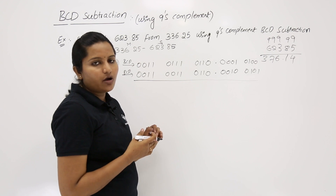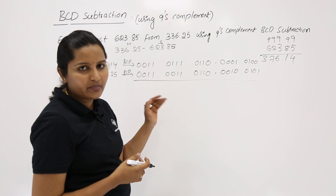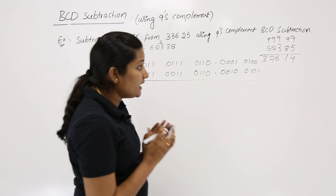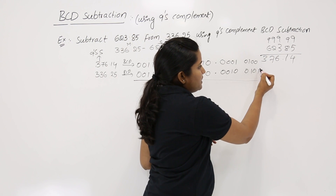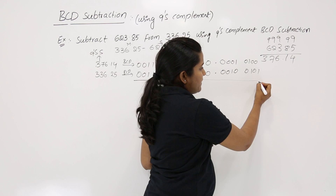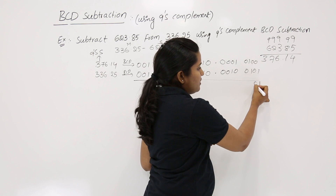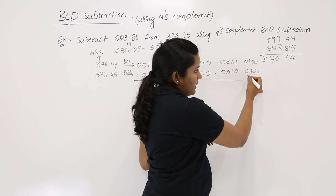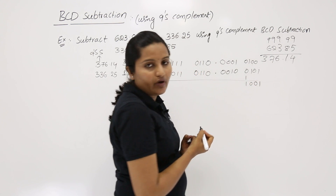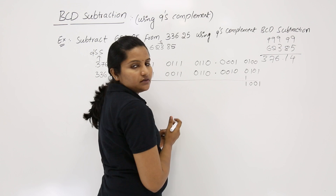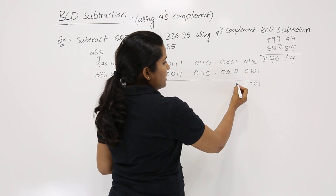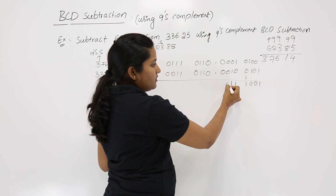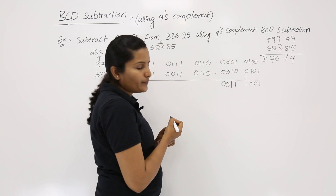After taking the 9's complement BCD and the minuend BCD, we perform BCD addition column by column. For the rightmost digit group: adding the bits gives result 1, 0, 0, 1. For the next digit group: 1, 1, 0, 0.